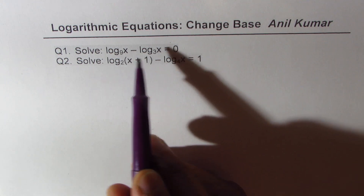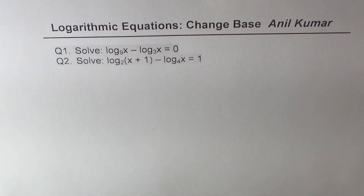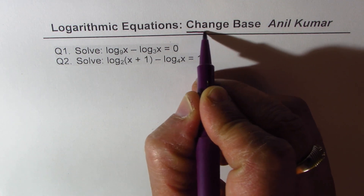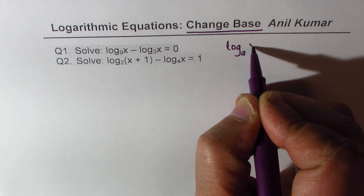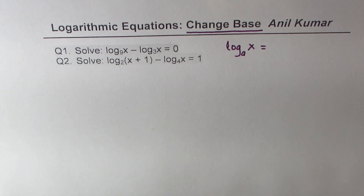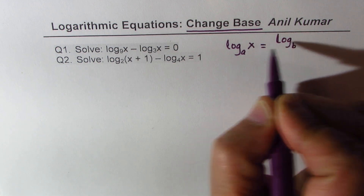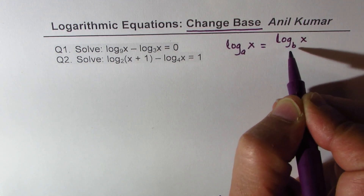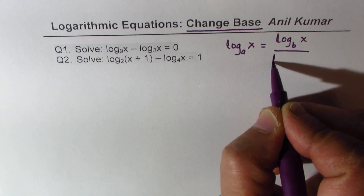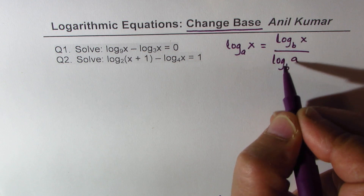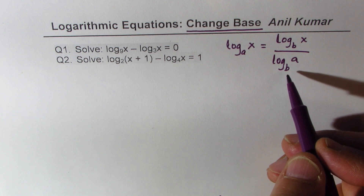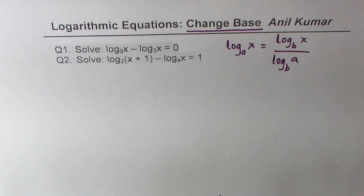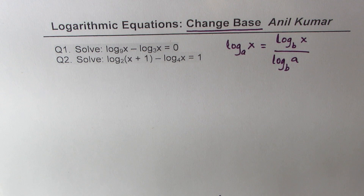To solve such equations, we have to write all these logarithms with one base — that's the whole issue. We do it with the change of base formula. Log base a of x can always be changed to any base. If you choose base b, it is written as log base b of x divided by log base b of a. Both the numerator and denominator are now written to base b, and both expressions are equivalent.